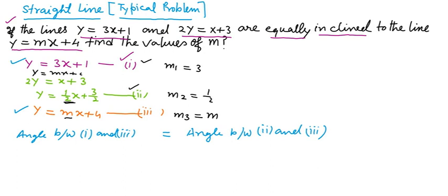Comparing the first equation with y equals mx plus c, the slope of the first line is m1 equals 3. The slope of the second line is m2 equals 1 by 2, and the slope of y equals mx plus 4 is m3 equals m.